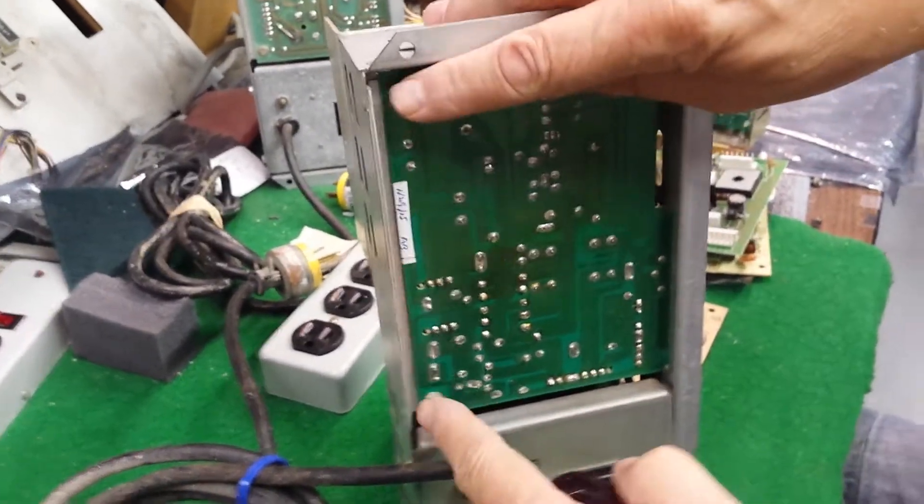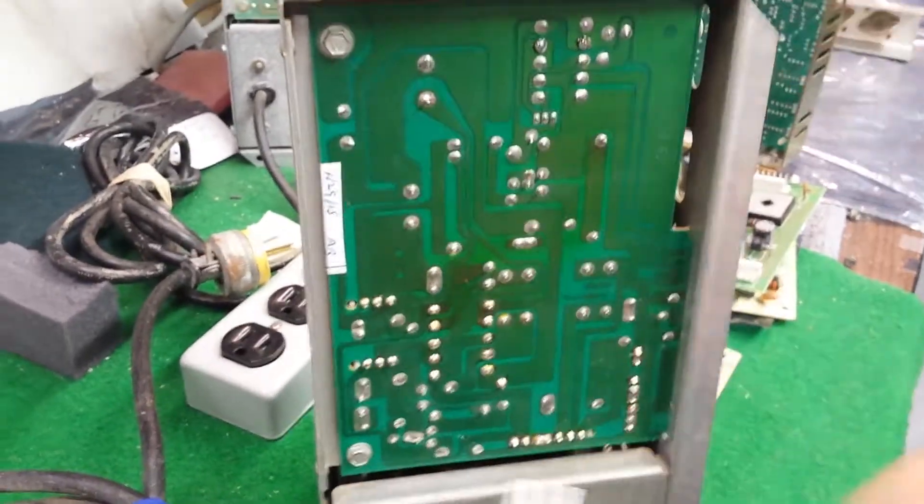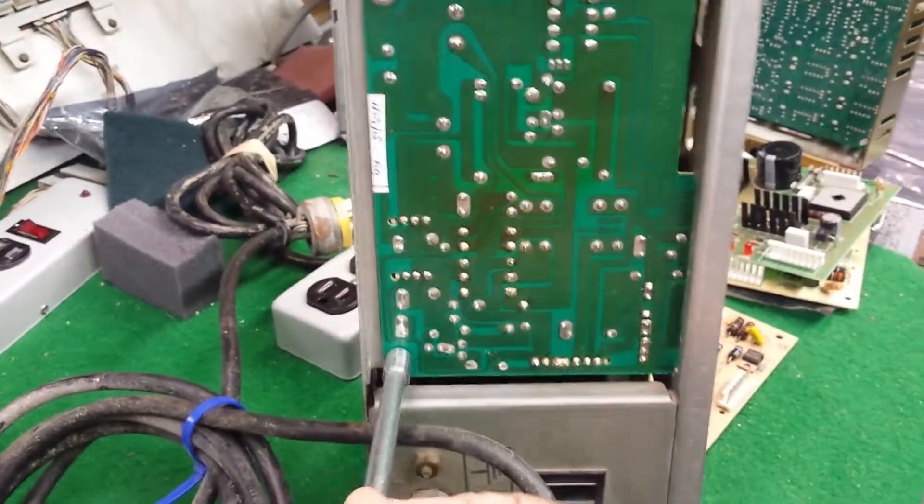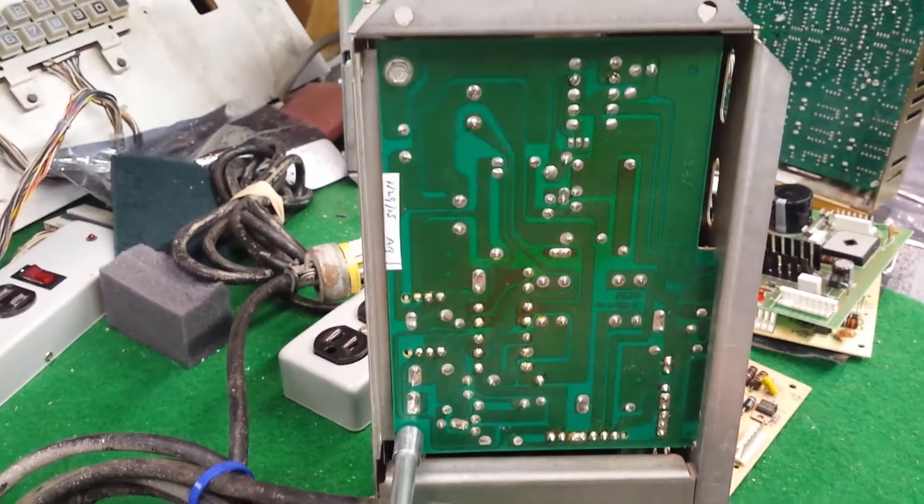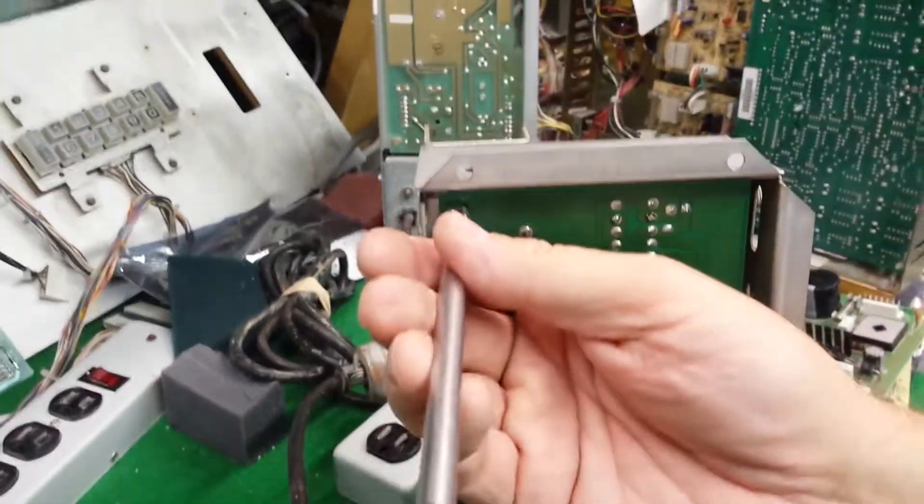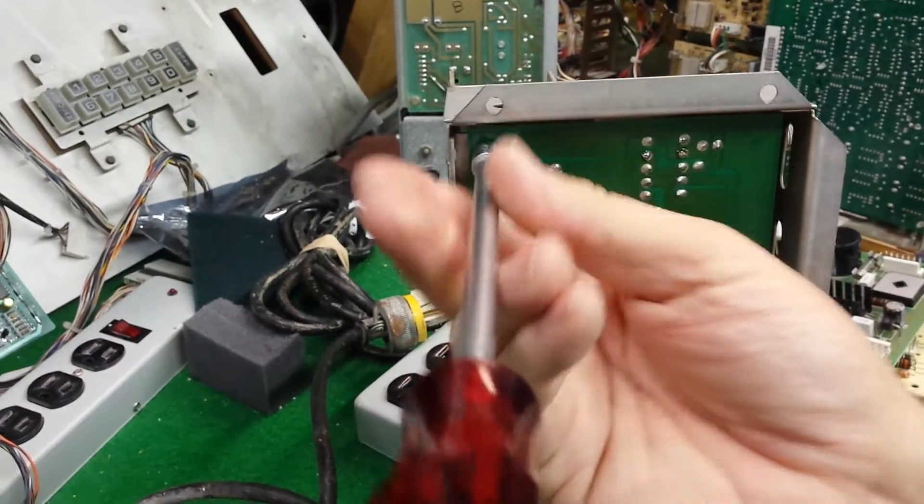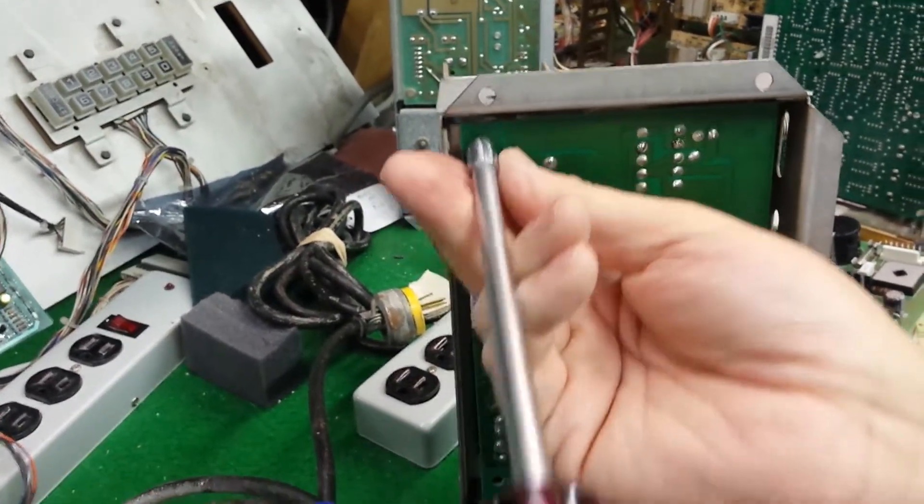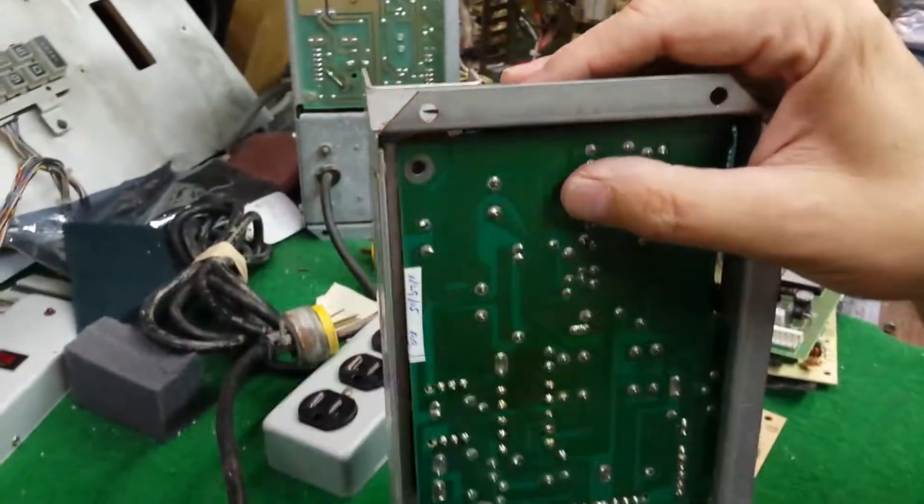So now, there's only two screws that hold the power supply board in, it's these two here. So we're going to take the one off the bottom, and the one off the top. Just put them aside.